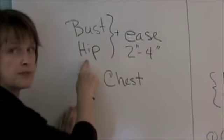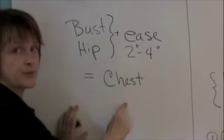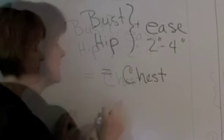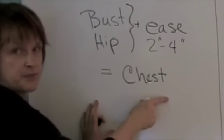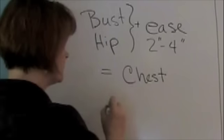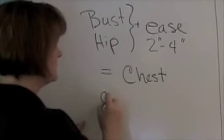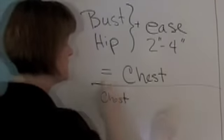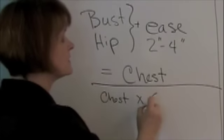Now even if you're starting with your hip measurement and adding your ease, we're going to call it the chest measurement. Next, we'll convert this chest measurement, which is in inches, to number of stitches. And we'll do that by multiplying the chest measurement by our stitch gauge.